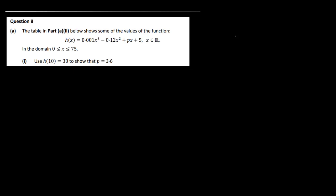So let's have a look. We know that h(10) is equal to 30, and that means that that's going to be equal to 0.001. We put 10 in there and cube it, minus 0.12, put 10 in here, square it, plus p times 10 plus 5.